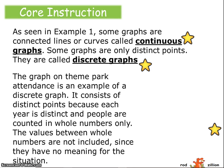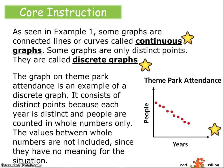An example of one of those would be this situation. The graph on theme park attendance is an example of a discrete graph. It consists of distinct points because each year is distinct and people are counted in whole numbers only. You can't have half a person.